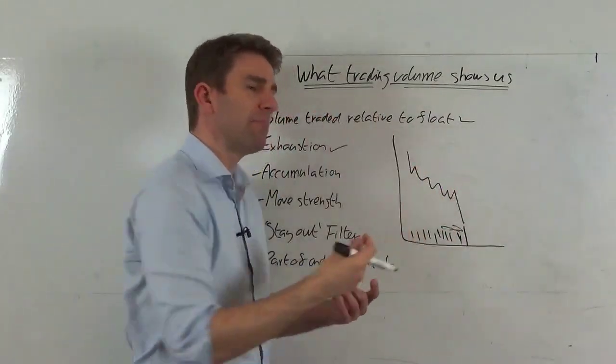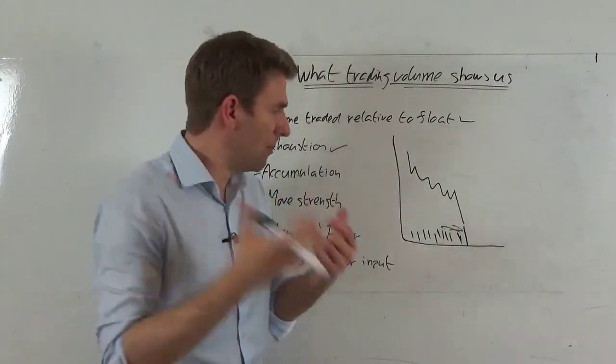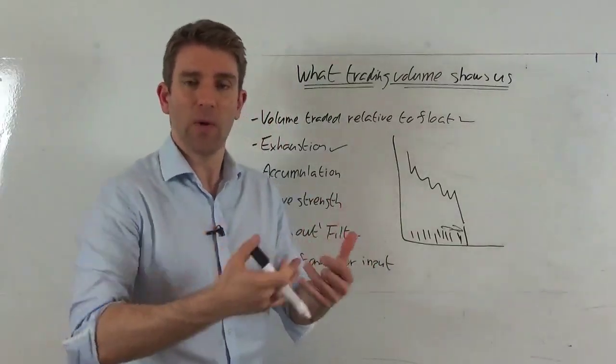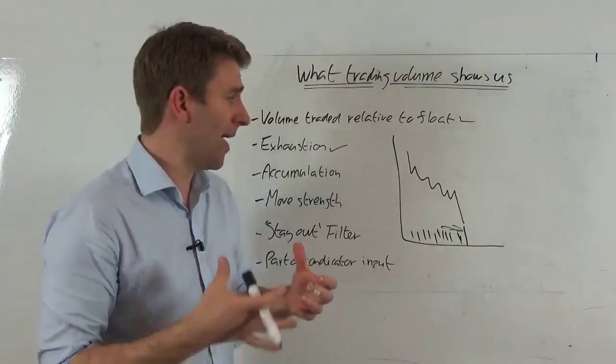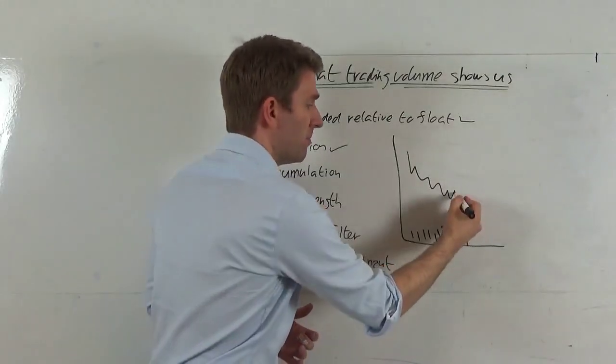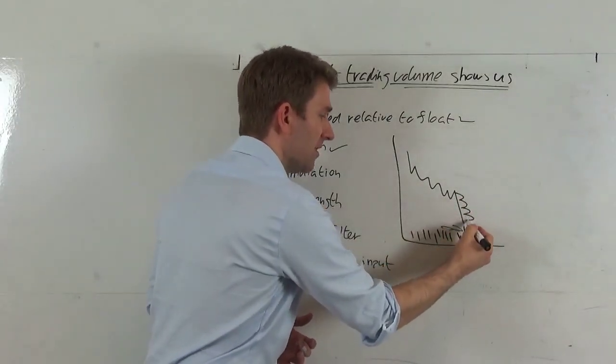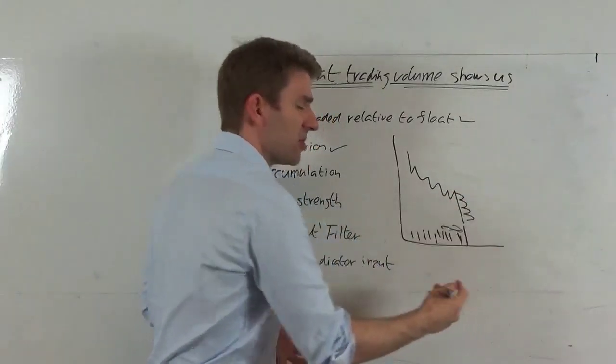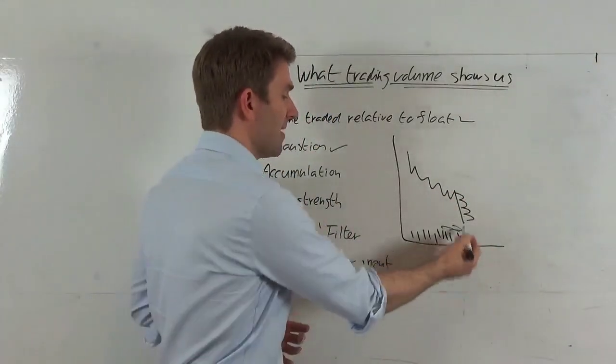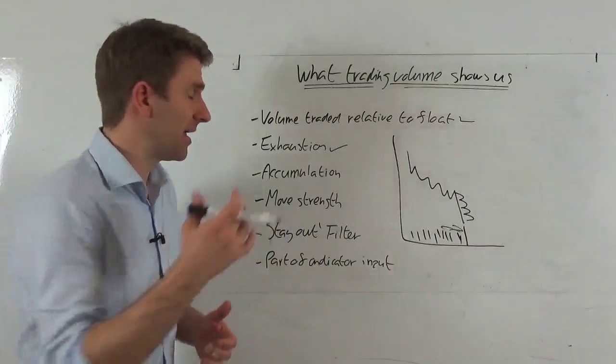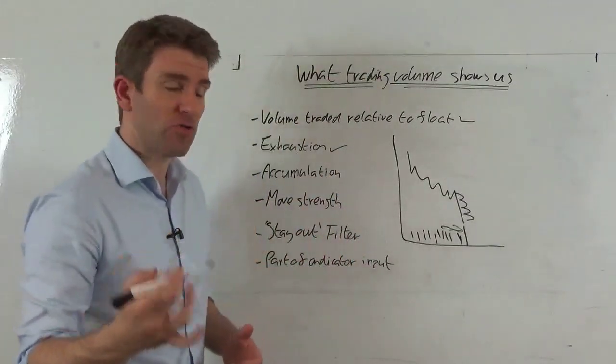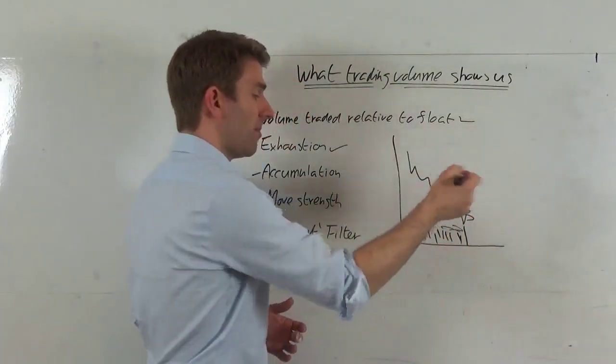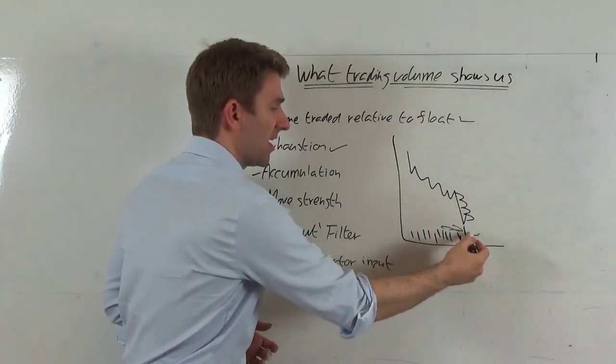If you think about a market move, as it moves away, eventually people are just like I can't take it anymore, I have to just go to market. I've been maybe pushing the limit down, moving the limit down, moving it down. I've not been filled and then the crowd just goes I just want to get out and they just sell at market. That causes the massive spike in volume. Often it can indicate the end of a trend, and maybe then you get a little pull back up. You can use that volume spike in conjunction with the price action to show you some exhaustion.